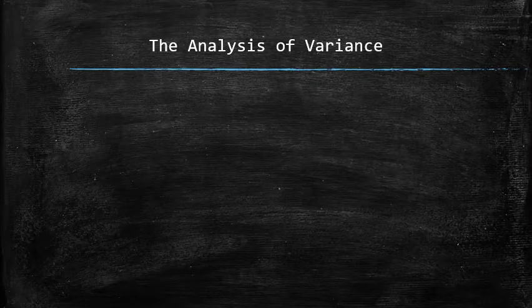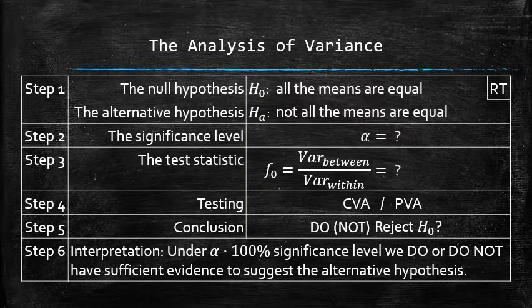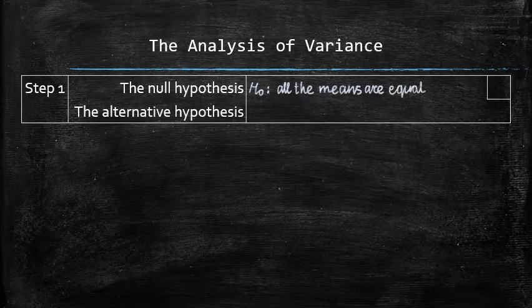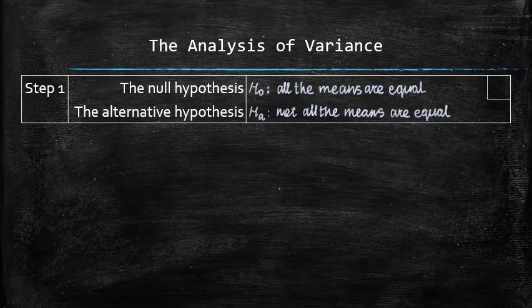We will use the following template to perform the hypothesis testing. In step one, we will set up the hypothesis. In step two, we will identify the significance level. In step three, we will find the test statistic using the formula. In step four, we will perform either the critical value approach or p-value approach to test the claim. In step five, we will draw the conclusion. In step six, we will interpret the results. The null and alternative hypothesis are always the same in any ANOVA test. The null hypothesis is that the population means are the same, and the alternative hypothesis is that at least one of the means is not the same as the others. An ANOVA test is always right tail.